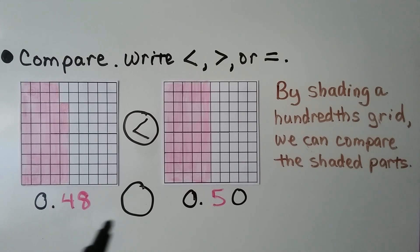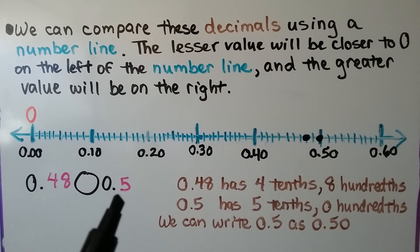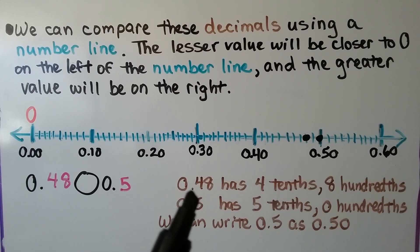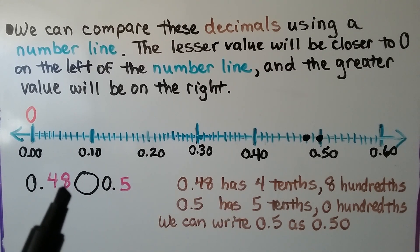Forty-eight hundredths is less than fifty hundredths. We can also compare these decimals using a number line. The lesser value will be closer to zero on the left, and the greater value will be on the right. We have forty-eight hundredths — which has four tenths and eight hundredths — and five tenths.